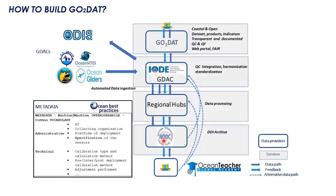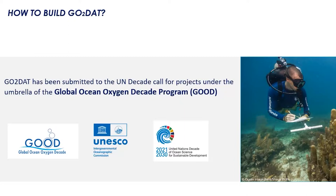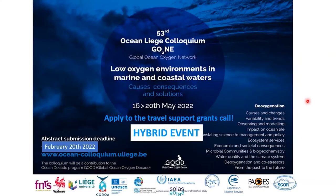There is also the possibility of alternative submission, but in that case it is important that data not directly submitted to NODC flow back to NODC to receive a data identifier, and that all modifications or adjustments to data are well documented and traceable. I would also like to inform you that GODAT has been submitted as a project in the frame of the UN Decade Call for Projects under the umbrella of the Global Ocean Oxygen Decade program. Thanks so much for your attention.